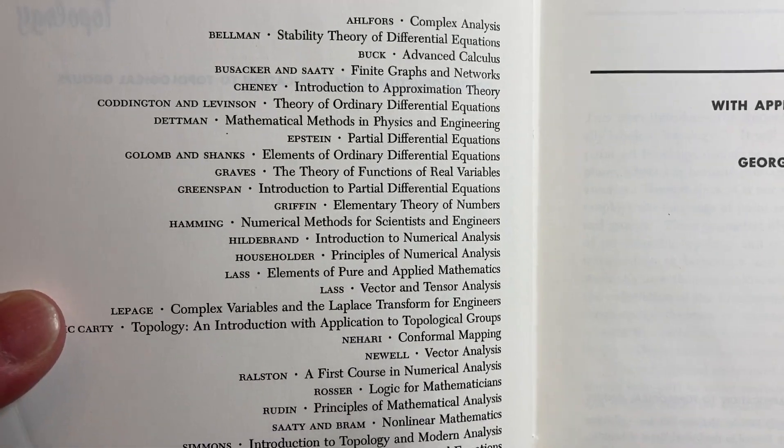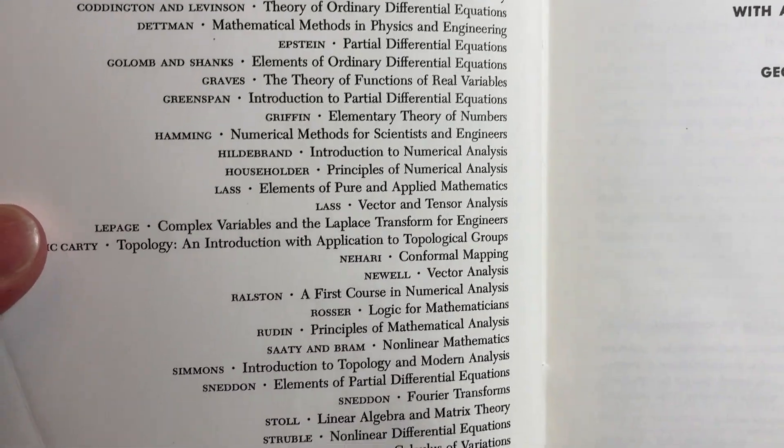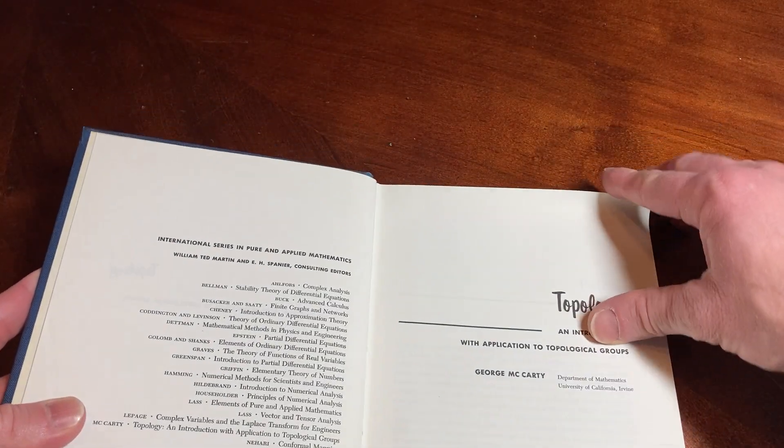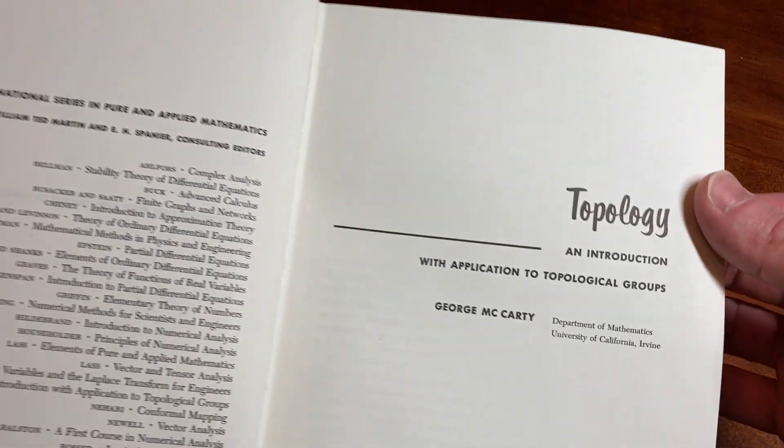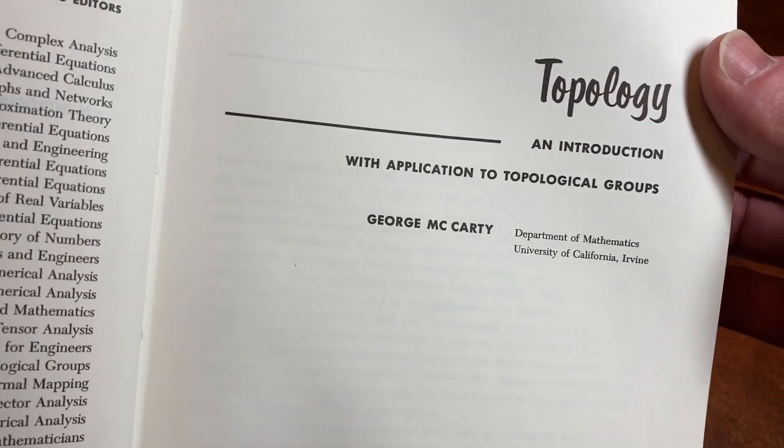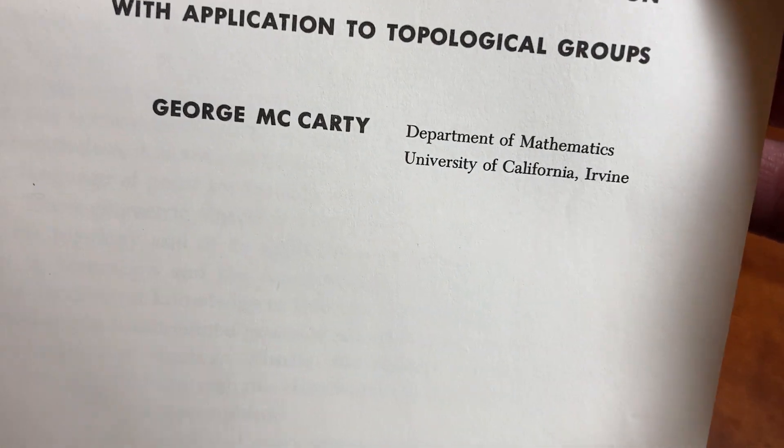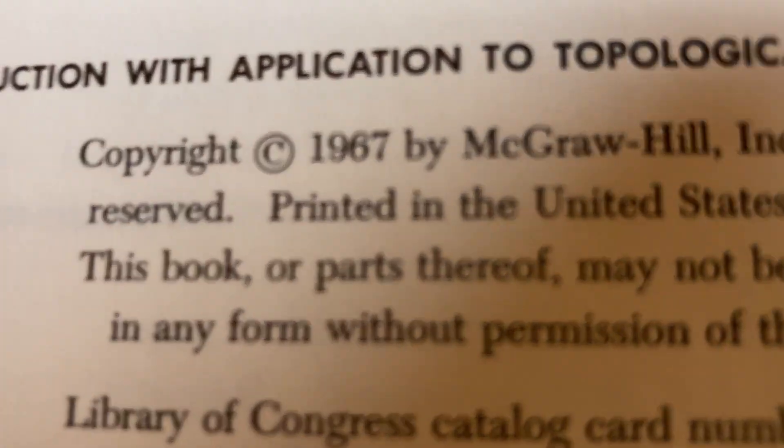Here you can see some names of different things, different books. Topology and Introduction with Application to Topological Groups. George McCarty, Department of Mathematics, University of California, Irvine. The McGraw Hill Book Company. Where's the copyright? Oh yeah, look at that. Wow. 1967.